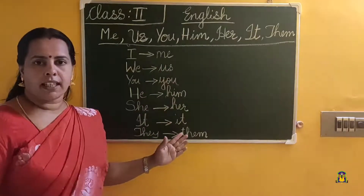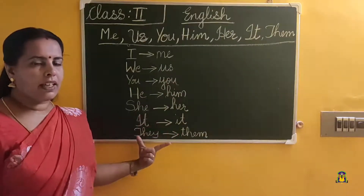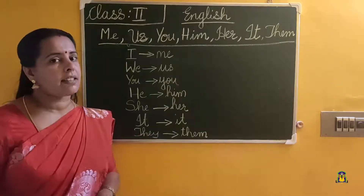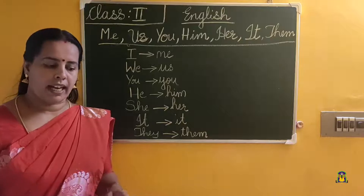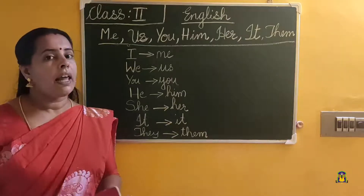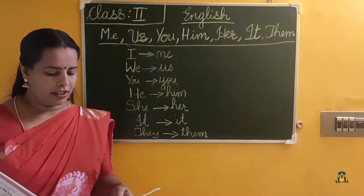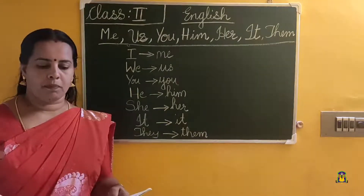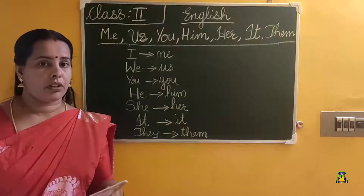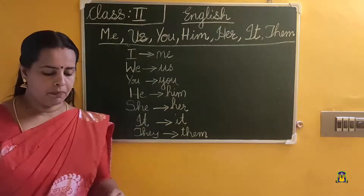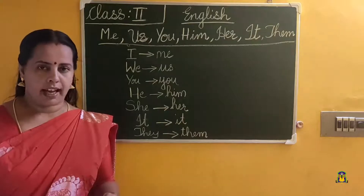So all these are object pronouns — we studied this. Now there are some exercises in your textbook. We will do that today. So lesson 8 from your grammar textbook, chapter 8, page number 24. We read all these examples — you should read it thoroughly. Now, writing corner. Look at the A exercise.